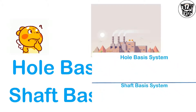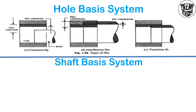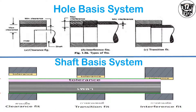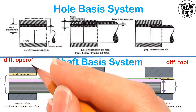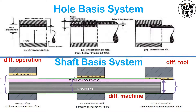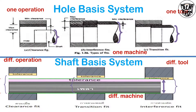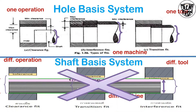In that operation, we can see that varying the shaft diameter is much easier compared to varying the diameter of a hole. If we want to create a different hole size based on the shaft diameter, we need to use different tools, different operations, and different machines — it takes more time and is a longer process. But for the shaft, it is too easy: we use only one tool, one machine, and one operation. Due to these disadvantages, shaft basis system is not used, and all industries use the hole basis system.